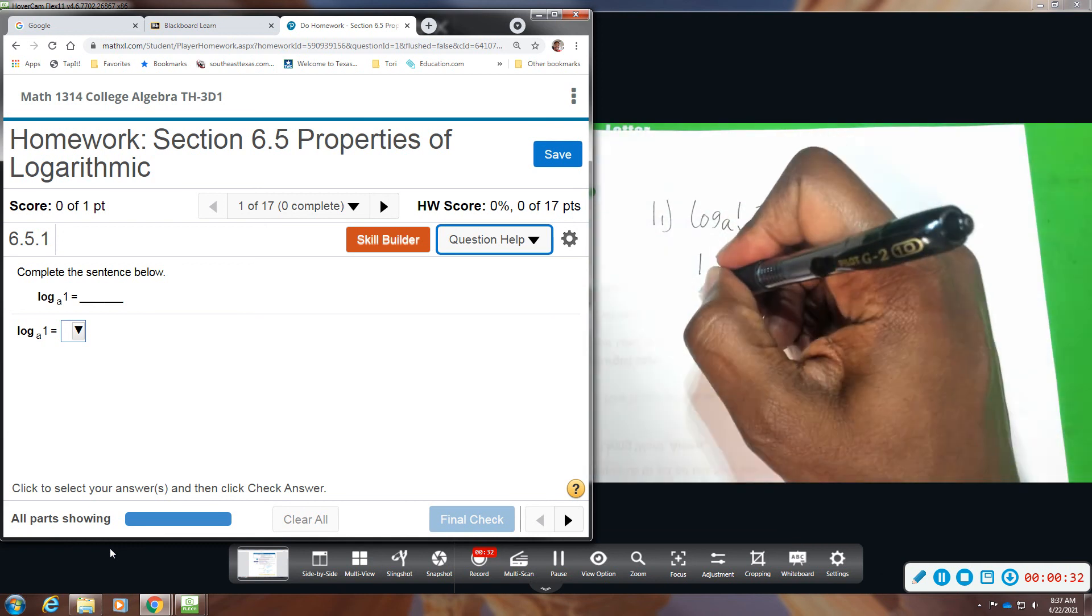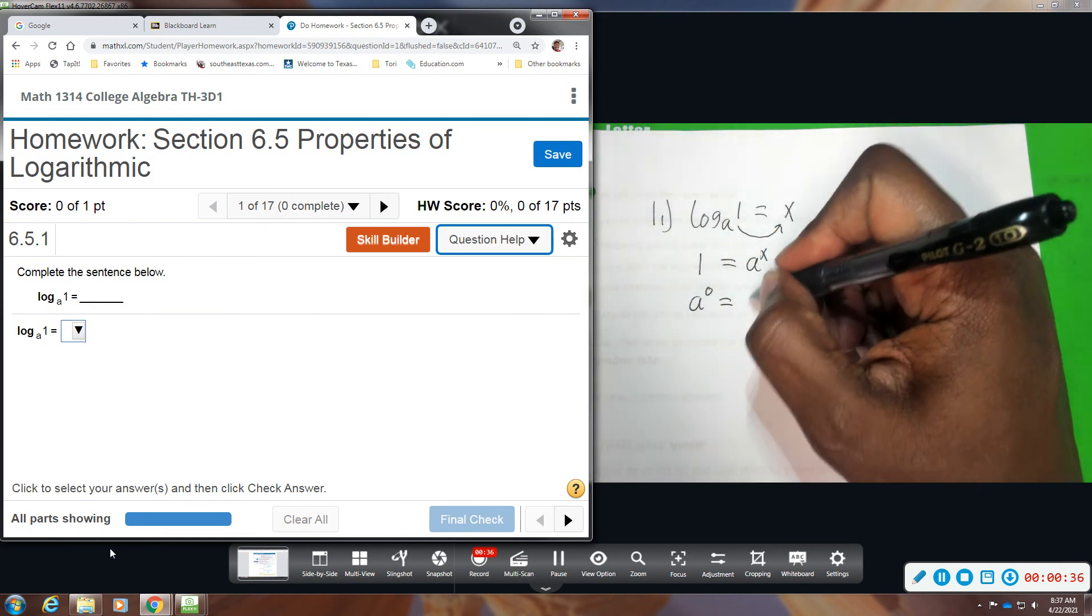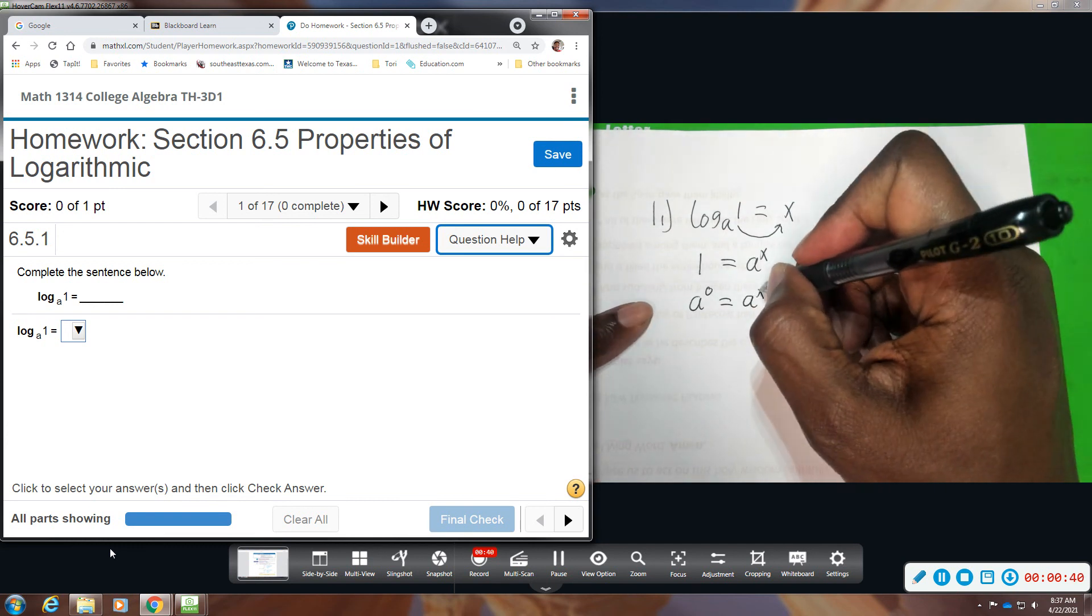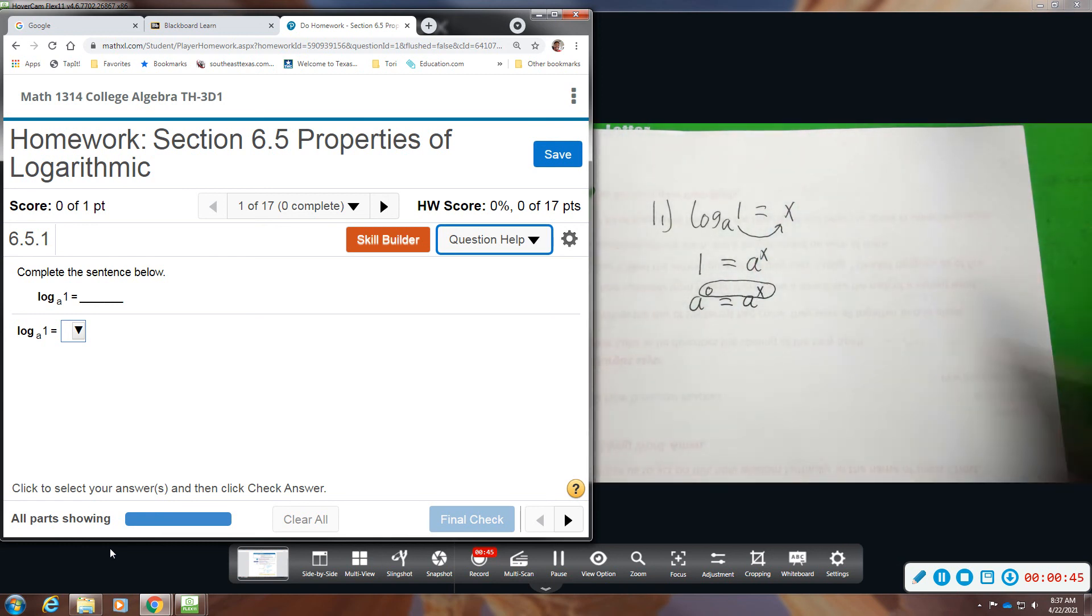We can write this as a to the zero power because anything to the zero power, except for zero, is equal to one. We can see that this would be equal to zero, so x would be equal to zero in this case. That's just one of the properties, and this is the way you would show that using exponential notation.